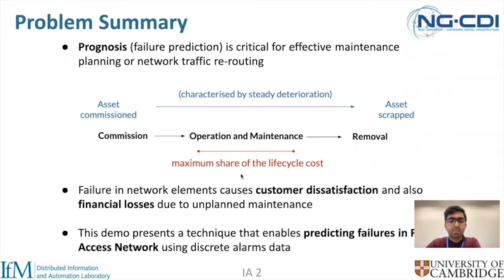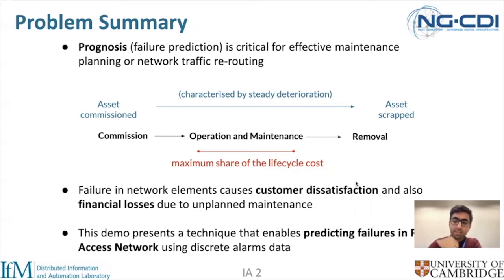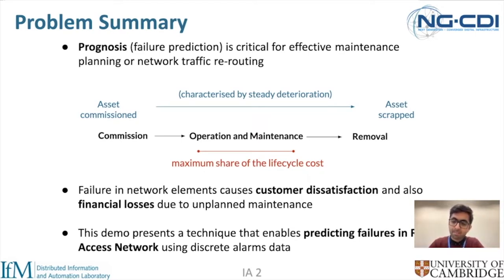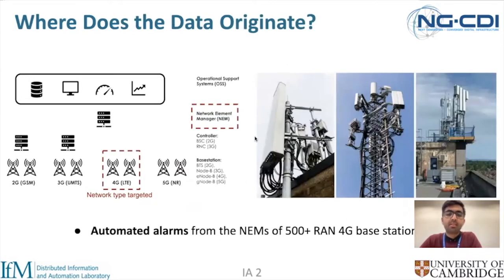In the phase where an asset is going through steady deterioration, it is in fact possible to predict the asset's failure using the data which has been acquired from its history. This data corresponds in general to anything like human notes, sensor measurements, or system-generated alarms. In our case, it is the system-generated alarms.